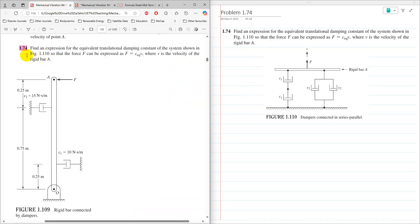Problem 1.74: Find an expression for the equivalent translational damping constant of the system shown in Figure 1.110, so that the force can be expressed as f equals c_equivalent times v, where v is the velocity of rigid bar A.